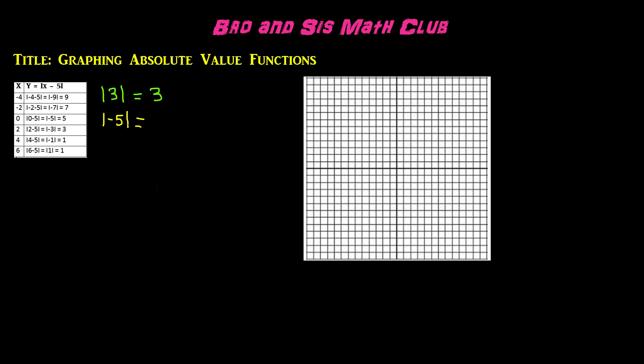Negative 5, the absolute value of negative 5 would be positive 5. And if it was positive 5, it would still be positive 5. Now that we understand absolute value, let's go ahead and graph absolute value functions.